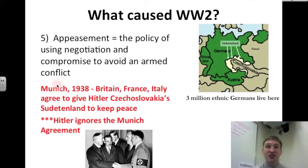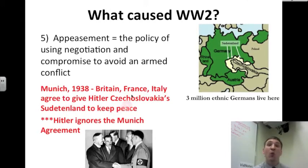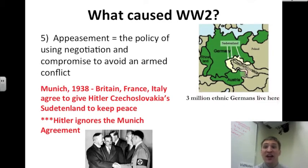It's Munich, a city in Germany, 1938. Britain, France, and Italy agree to give Hitler and the Nazis Czechoslovakia's Sudetenland in order to keep peace. Here's Germany, here's Austria, and this yellow portion of Czechoslovakia is the Sudetenland. Three million ethnic Germans live here. It's filled with coal and oil, and Germany wants it. They get it.